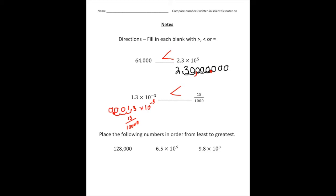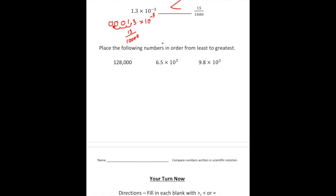For the next problem we have to place the following numbers in order from least to greatest. Again we want to put these numbers all in either standard form or scientific notation — it's really up to you. For this one I'm going to convert to scientific notation since the other two are, so that's going to be 1.28 times 10 to the 5th power. Now we have 1.28 times 10 to the 5th, 6.5 times 10 to the 5th, and 9.8 times 10 to the 3rd. Based on that we know 9.8 times 10 to the 3rd is going to be the smallest, so we'll put a 1 there.